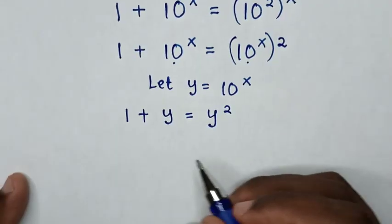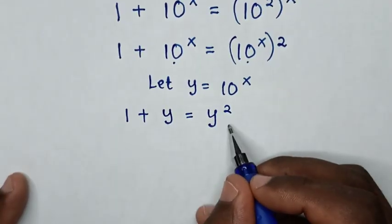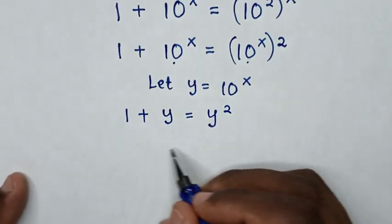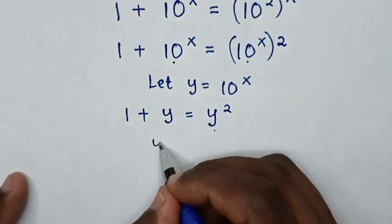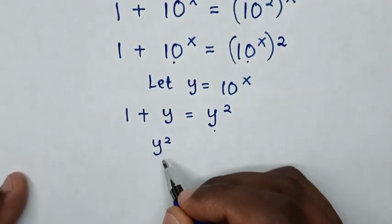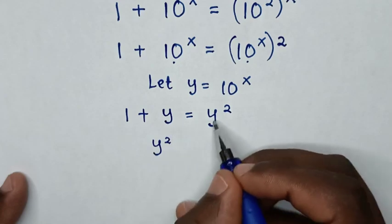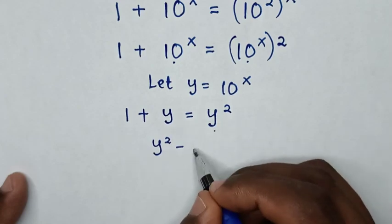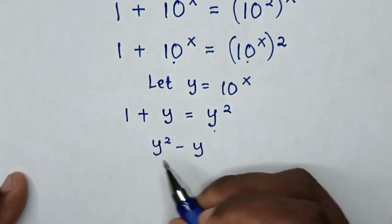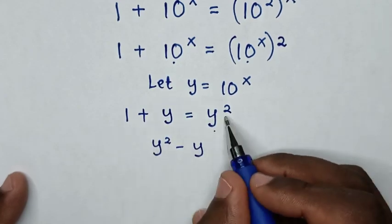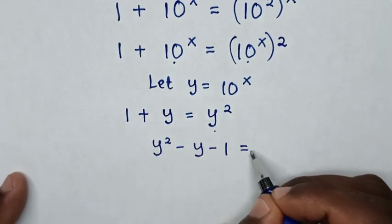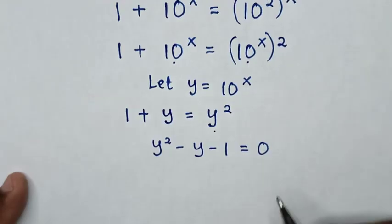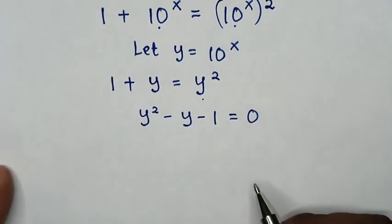Then in the next step, we take y to the right side and 1 to the right side. So it becomes y² minus y minus 1 = 0.